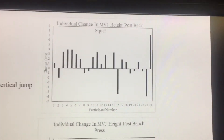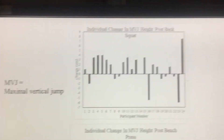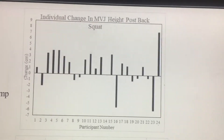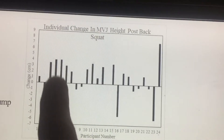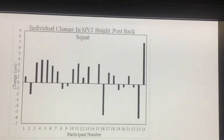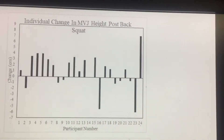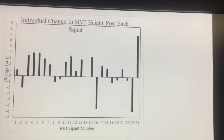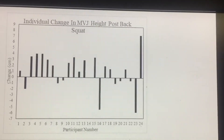What we found — and this is supported by previous research — is that the vertical jump improved if the squat exercise was done a couple of minutes before. This graph shows the individual participants in the study. There were 24 participants, and anytime the bar goes above the zero line, it shows there was a positive change in vertical jump height if they performed a squat a couple of minutes before. Most of the participants had an improvement in their vertical jump — this was the post-activation potentiation.